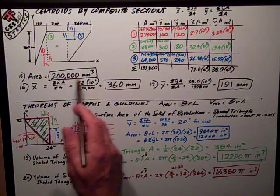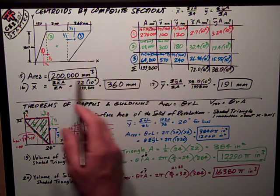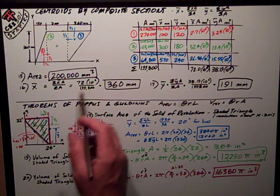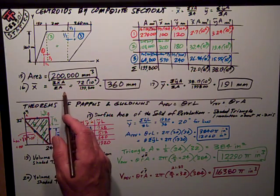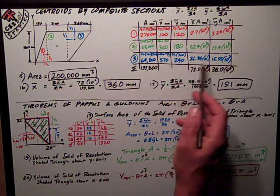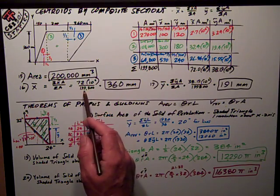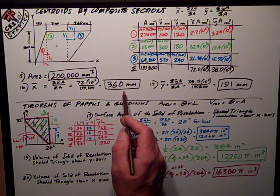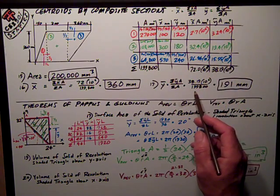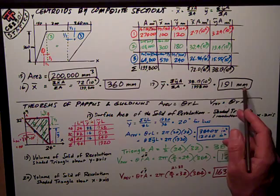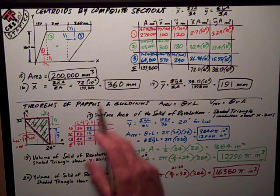So my area to three significant digits is going to be 200,000 millimeters cubed. X-bar is the sum of x-tilde A over sum of A. This number, 72 million divided by that, 360 millimeters. Y-bar is the sum of this y-tilde A divided by the area, 191 millimeters.